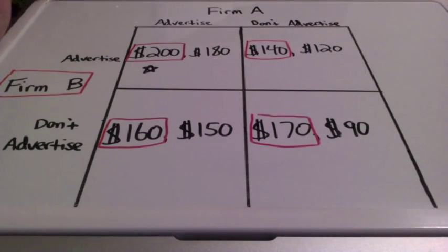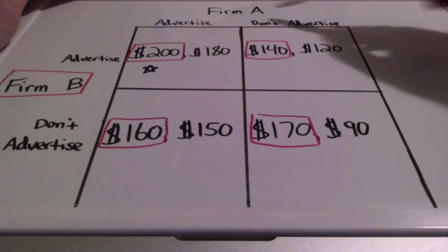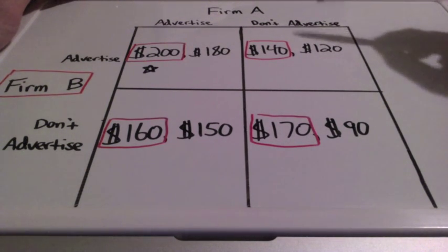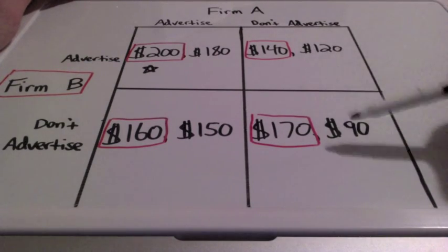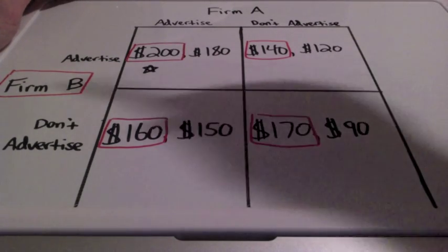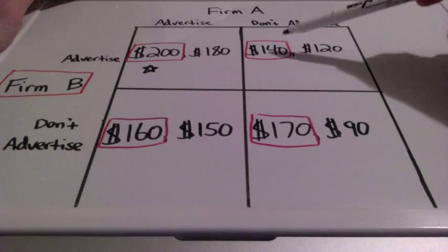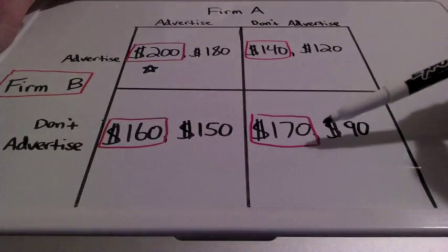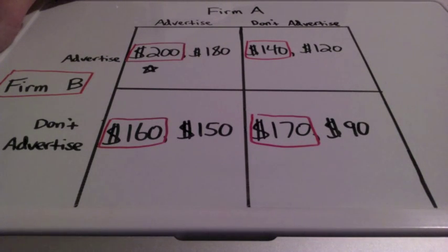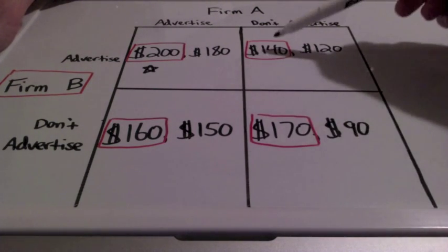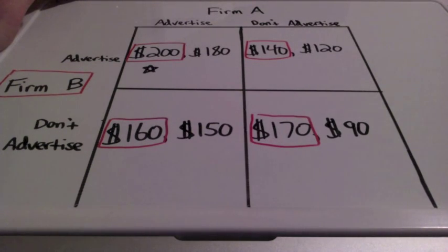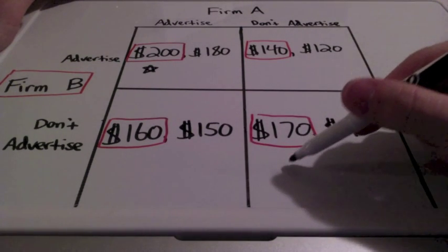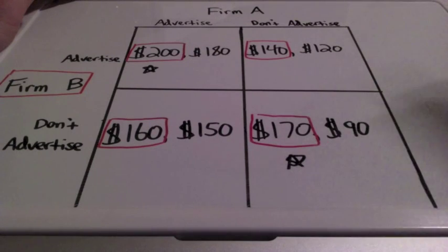When firm A is not going to advertise, we're looking at these two boxes here. Is firm B going to advertise and make $140 in profits, or choose to not advertise and make $170? Well, $170 is greater than $140, so firm B will not advertise.